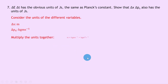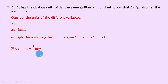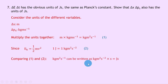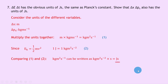Multiplying the units together: meters times kilogram meters per second equals kilogram meters squared per second — label this number one. Since kinetic energy Ek equals one-half mv squared, one joule equals one kilogram meter squared per second squared — label this number two. Comparing one and two, kilogram meters squared per second can be written as kilogram meters squared per second squared times seconds, because s to the minus 2 times s to the 1 gives s to the minus 1. Since kilogram meters squared per second squared is equivalent to one joule, we have shown the units are equivalent to joule seconds.